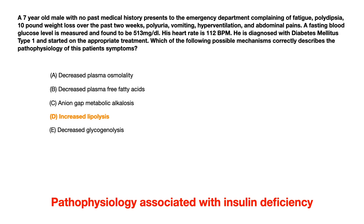There are various different pathophysiologies occurring, and test writers really love to go after these because they involve all of the biochemical reactions you need to know. It's a great opportunity to connect something clinical like type 1 diabetes with the different biochemical pathways — how do these pathways respond to increased versus decreased insulin, increased versus decreased glucagon, etc.